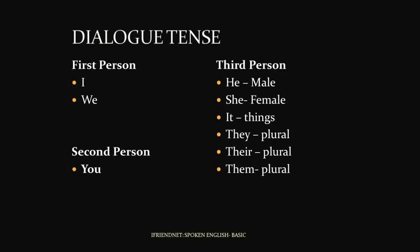Let's look at examples for the third person: 'He is a good boy' — li se yon bon garçon. 'She is beautiful.' 'It is a brown table.' 'They are singing.' 'This is their book.' 'We have them with us.'